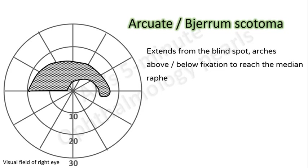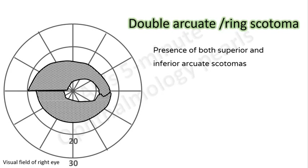If both superior and inferior arcuate scotomas are present it is termed a double arcuate or ring scotoma.